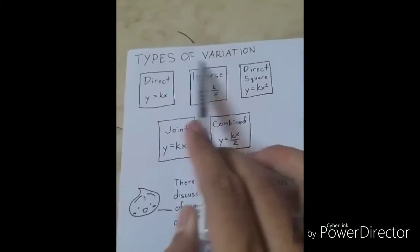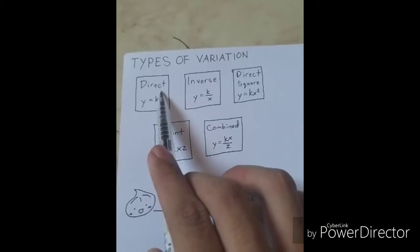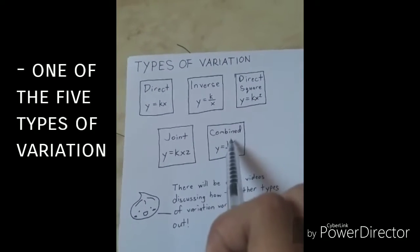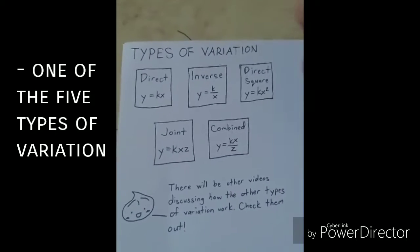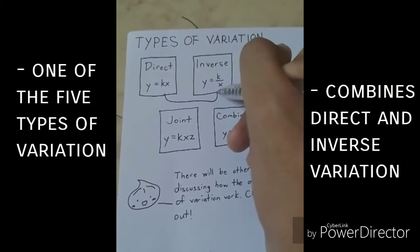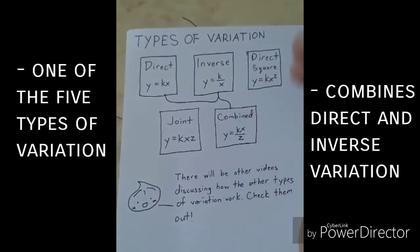In math, there are five types of variation. We've got direct, inverse, direct square, joint, and combined, the one I'm talking about. Combined is a combination of direct and inverse variation.